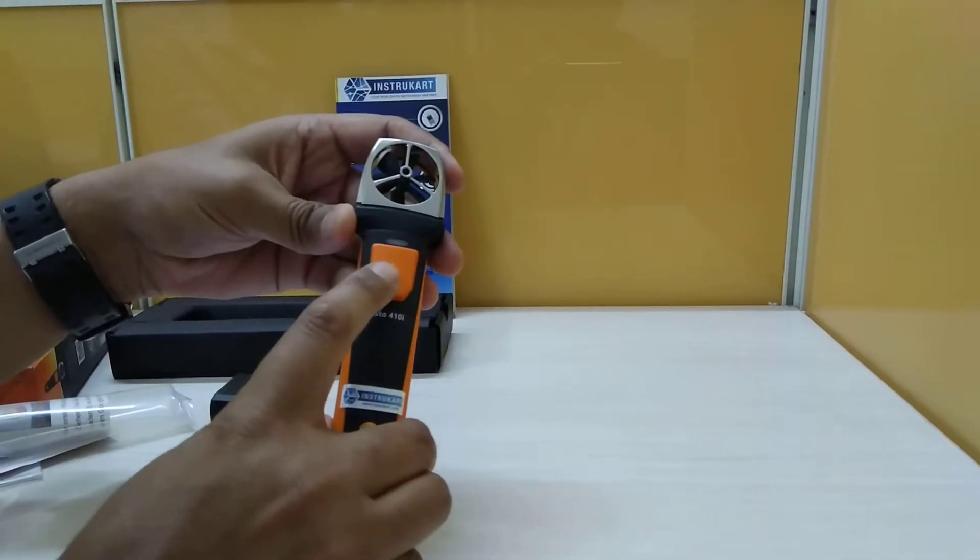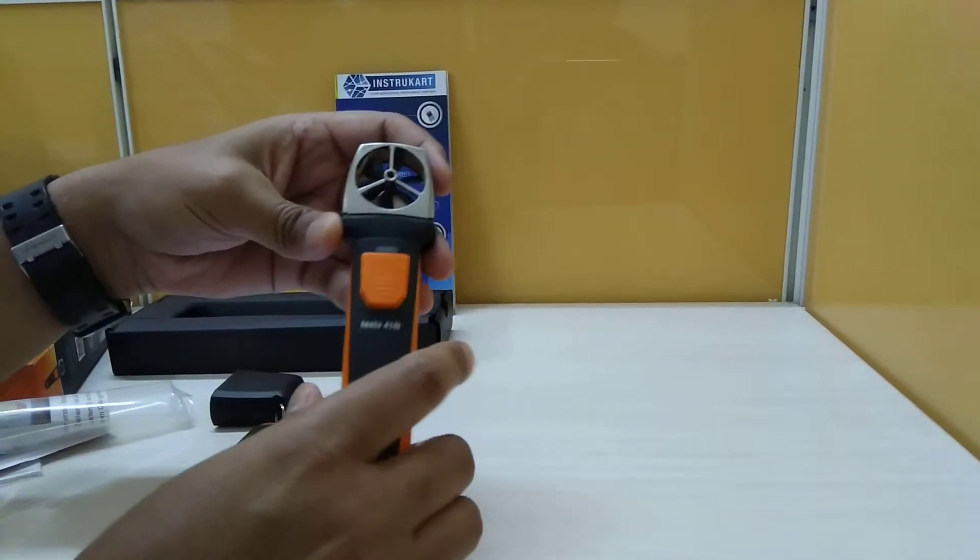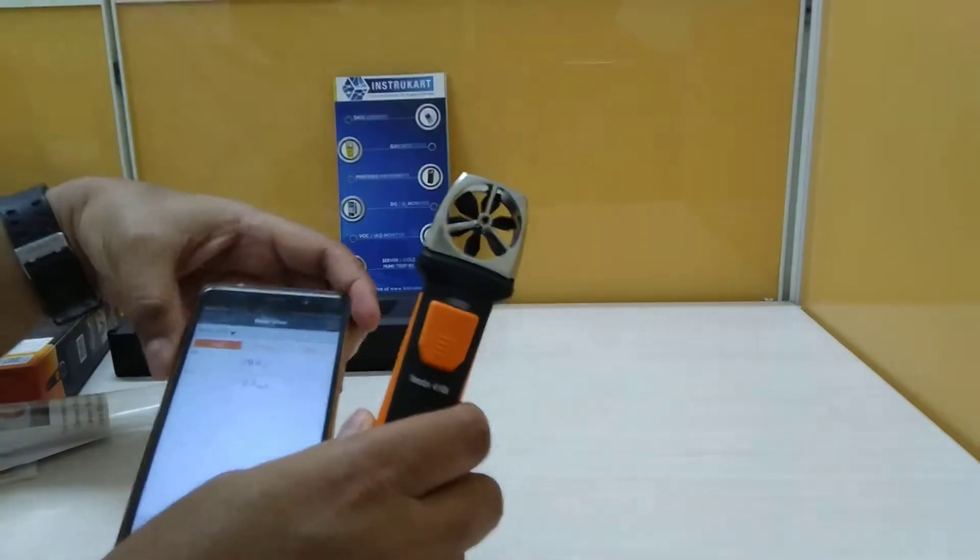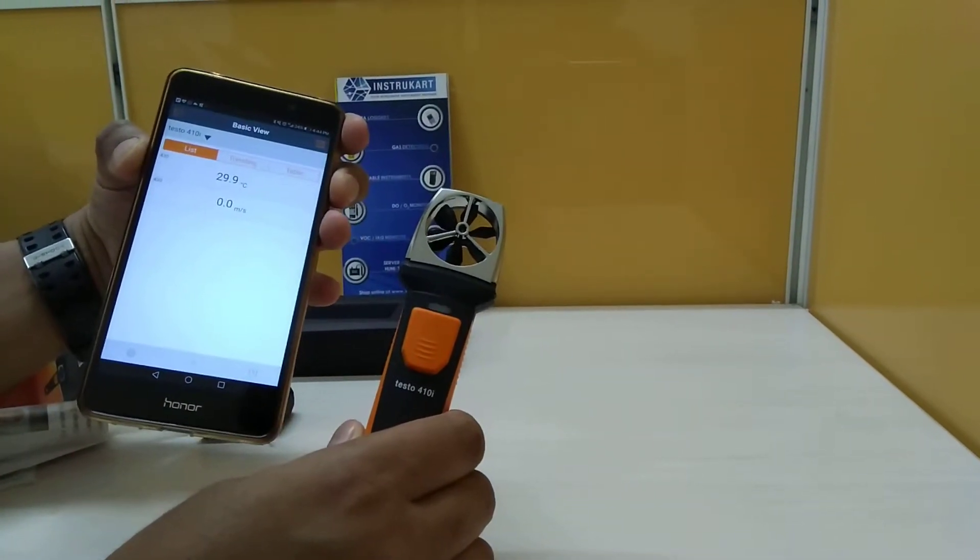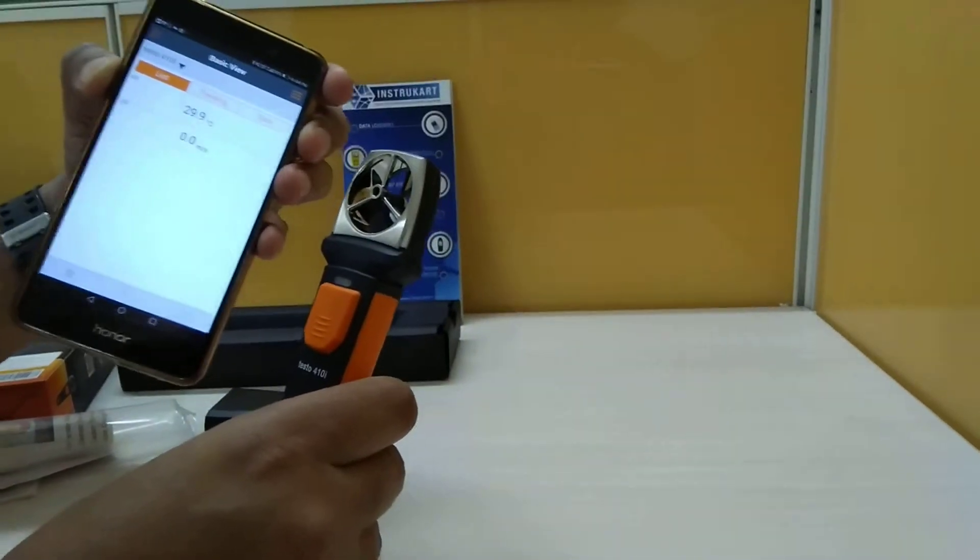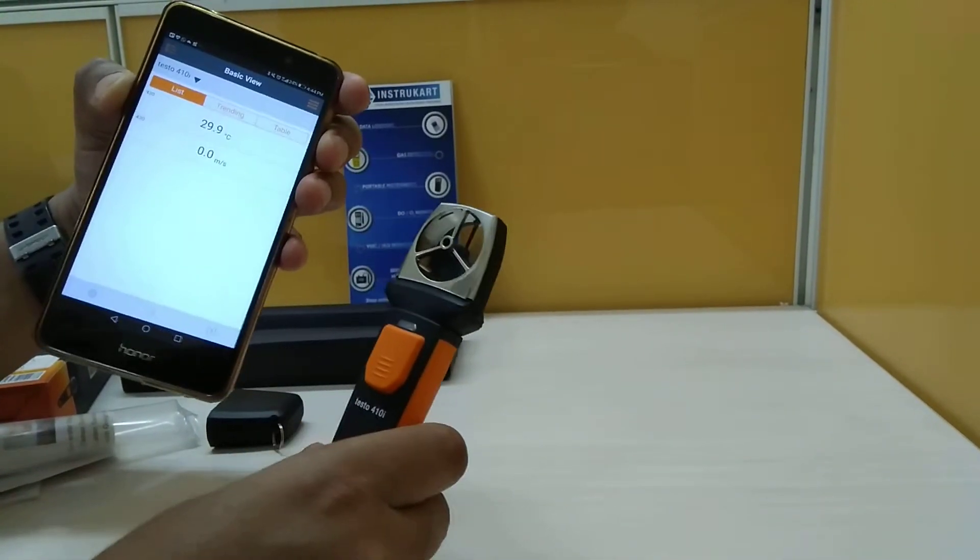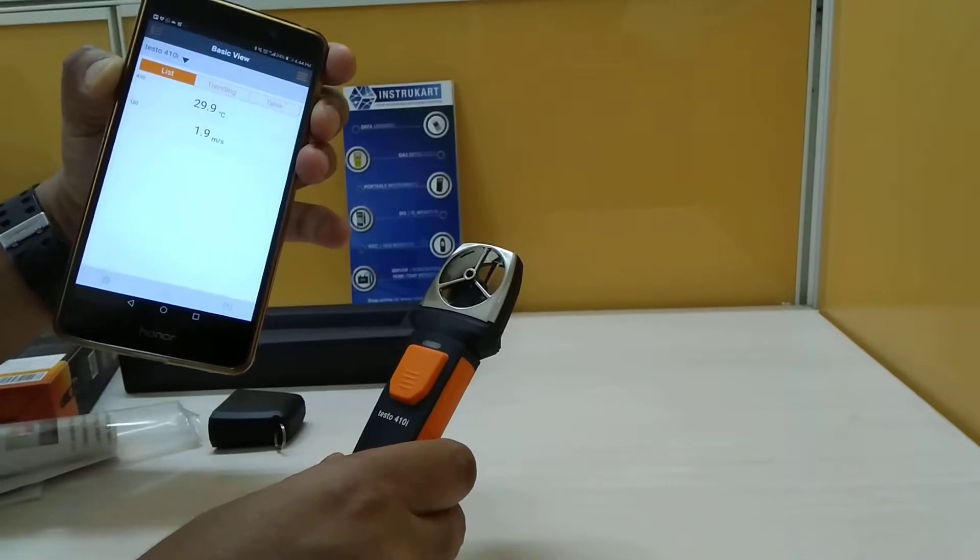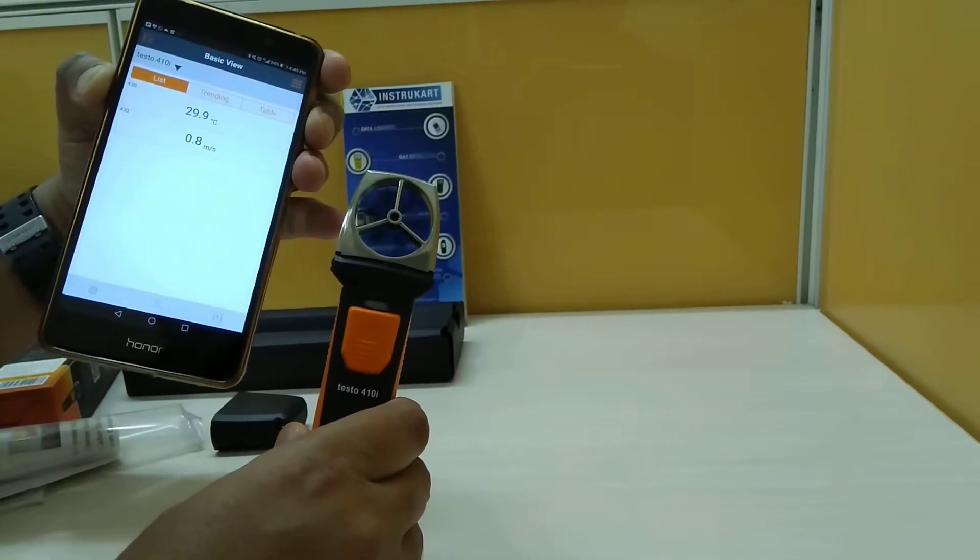This vane anemometer with temperature sensor has one-key operation and you can connect it to your smartphone to see the live readings. As you can see, the live reading shows the changes.